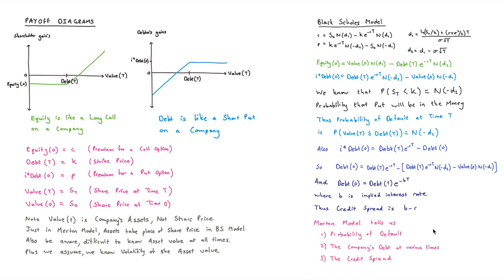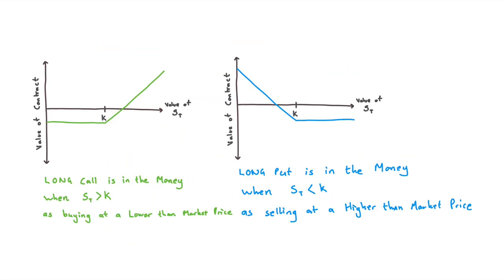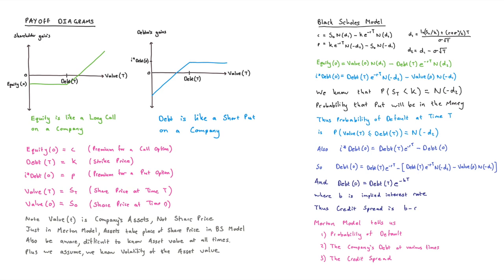So the Merton model is very powerful: it tells us the probability of default, can be used to calculate the company's debt at various times, and can be used to calculate the credit spread. This was a high-level overview — it is a tricky model. I'd recommend going back to review calls and put options, studying the payoff diagrams, and tackling the Black-Scholes model. Once you've done that, rewatch this video. We can use the share price of a company to determine the probability of default on its corporate loans, the company's debt, and the credit spread — very powerful things from the Merton model.